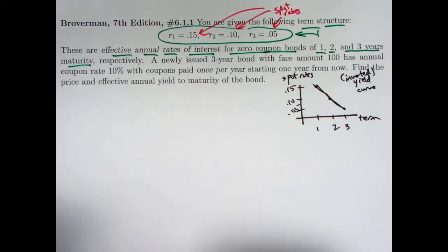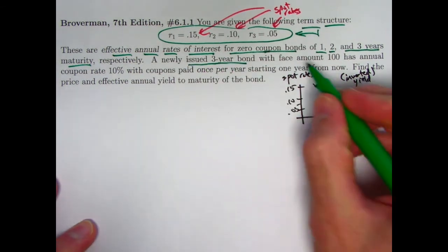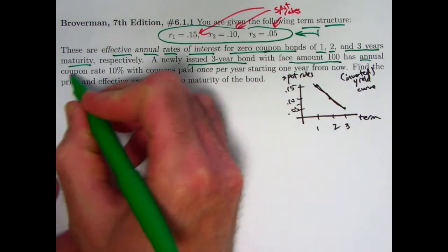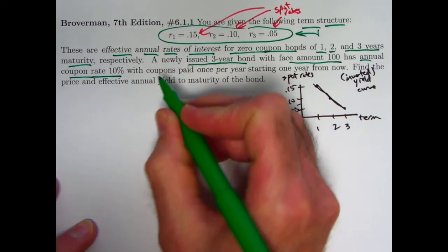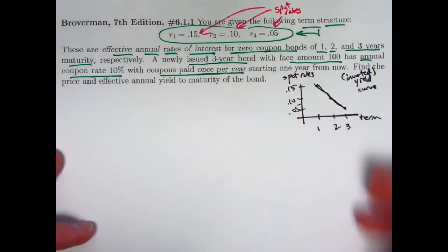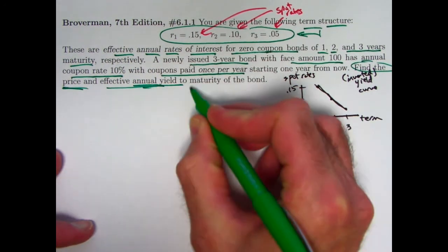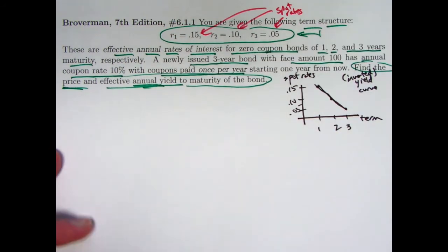So what are we supposed to do now? It says a newly issued three-year bond that is going to have coupons. It's got a face amount of 100 and has annual coupon rate of 10% with coupons paid annually. This is not the usual thing. Remember, coupons usually are paid twice a year. Here, we're keeping it simple and saying they're just being paid once a year starting one year from now. Find the price and the effective annual yield to maturity of the bond based on these spot rates here.